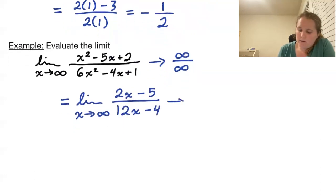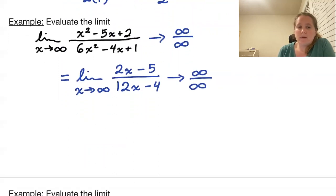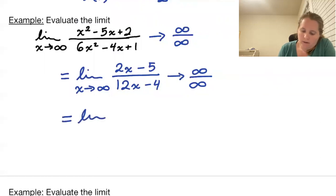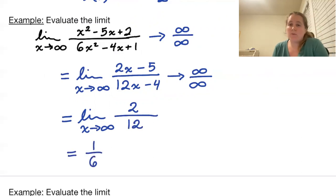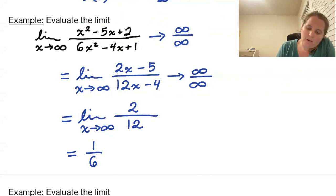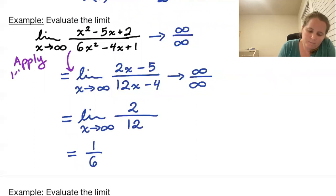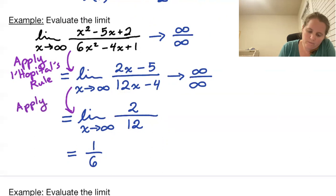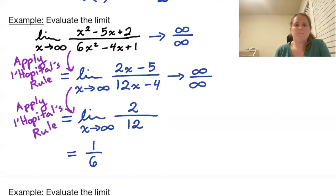This is again infinity/infinity, so we can apply L'Hopital's Rule again. Now we have the limit as x goes to infinity of 2 over 12, which gives us 1/6. This is precisely what the rule told us: when the degrees match, we get the ratio of the leading coefficients. So we applied L'Hopital's Rule twice here.